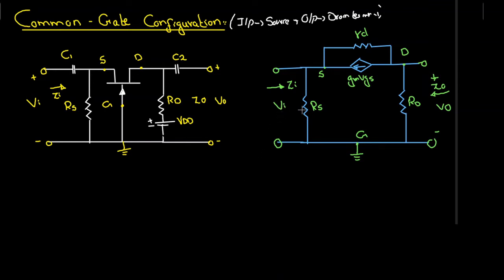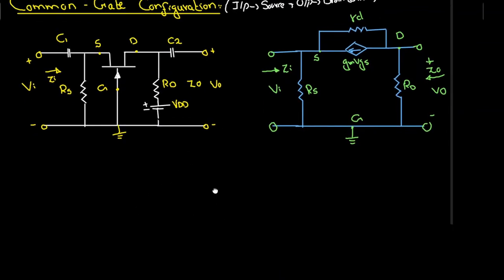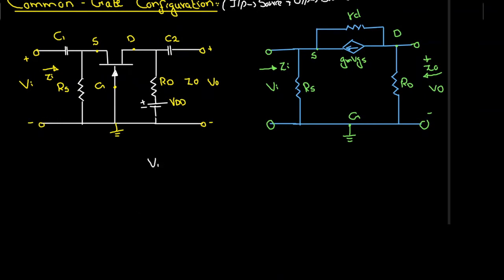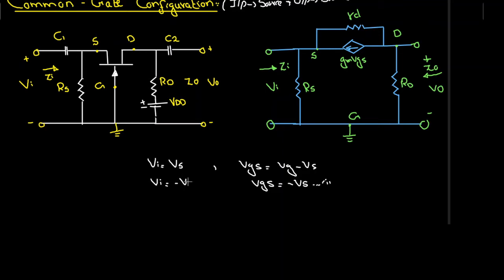The input VI is applied at the source terminal, so VI equals VS. Since VGS equals VG minus VS and the gate is grounded, VGS equals minus VS. Therefore, VI equals VS equals minus VGS.